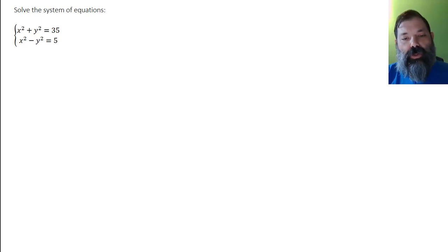What I immediately notice is the coefficients on the y squared terms are opposites. So if I add the equations together, I will eliminate the y variables and be able to solve for x.